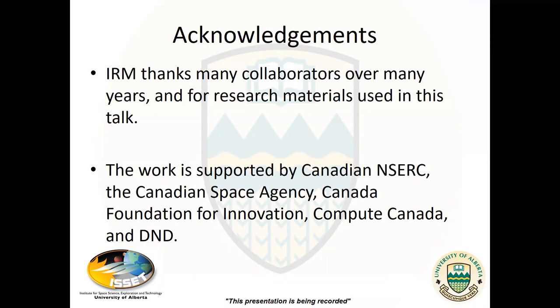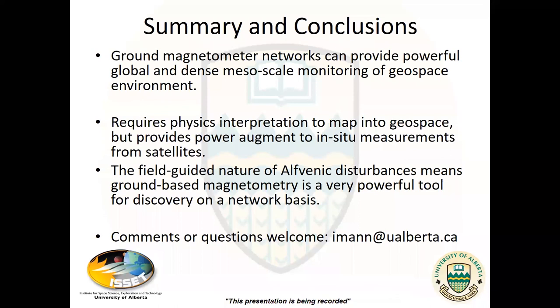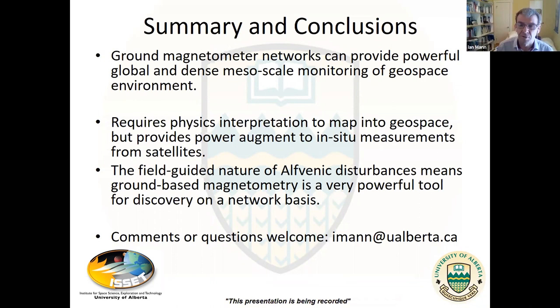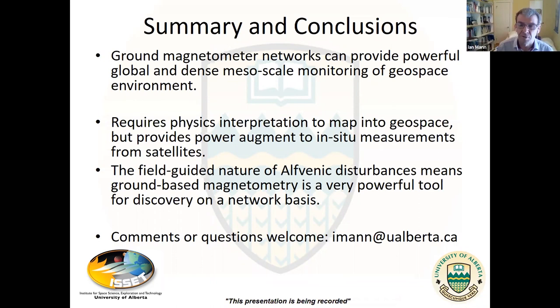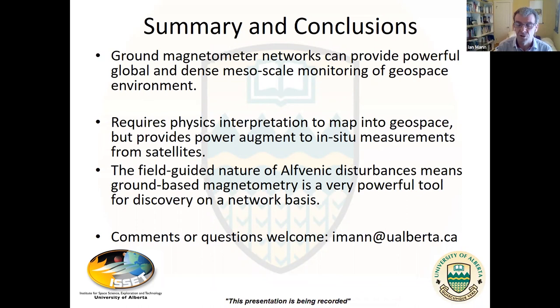Thank you, Professor Mann. It was very interesting and very clear. People can still post questions in our chat box. We have one question from Vanya Jordanova: when you were talking about the PI1 and PI2 examples, are the large dB/dt disturbances associated with convection also associated with storm development? The speaker responds: one of those incidences looked like it might have been associated with propagation of disturbances from a substorm activation that then made its way along the flanks, suggesting convective flow being released in non-stationary convective transport from the closure of tail flux.